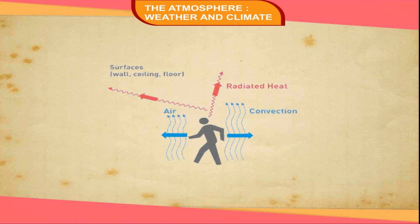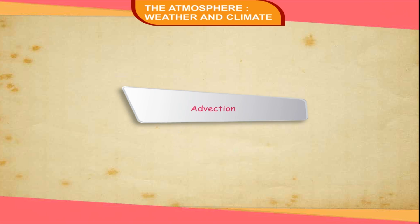Convection. When the air gets heated and becomes lighter, it starts to rise. This process of transfer of heat is called convection. The rising air currents are called convection currents, and as they rise, they keep transferring heat from the lower layers of air to the higher layers.